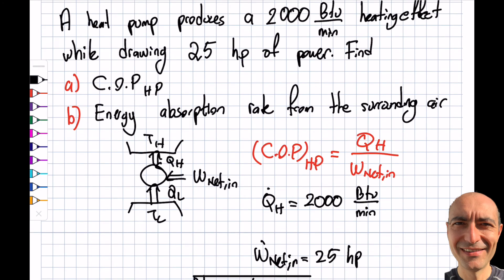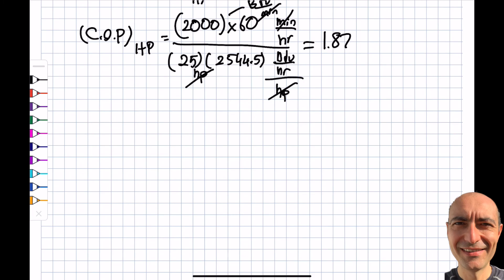It's asking for Q_dot_L. That doesn't sound difficult because I know from the first law that W equals Q_H minus Q_L. Q_dot_H minus Q_dot_L equals W_dot_net_in. Q_dot_H was 120,000 BTU per hour.